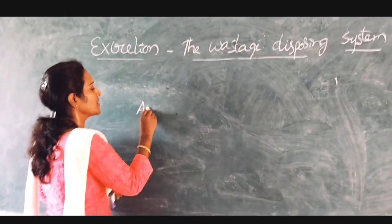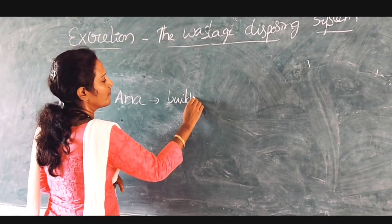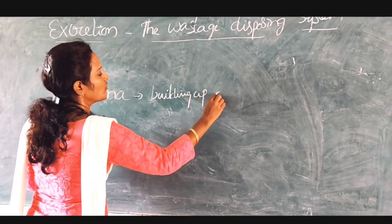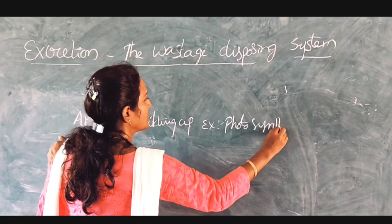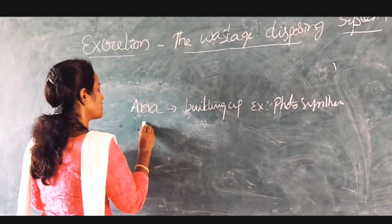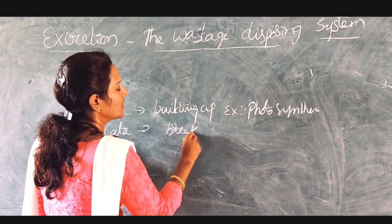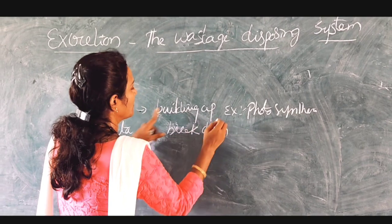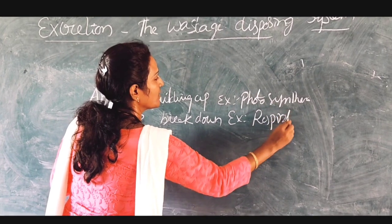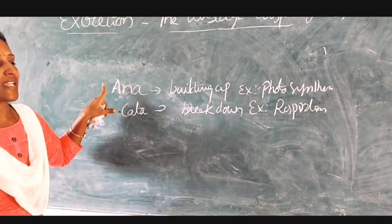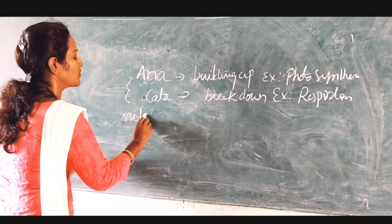In anabolic activities, anabolism means building up, like photosynthesis. Catabolic activity, that is catabolism, means breakdown. Here in photosynthesis, building up — in the same way, respiration is catabolic. During anabolic and catabolic activities, that is metabolic activities, the waste is produced.